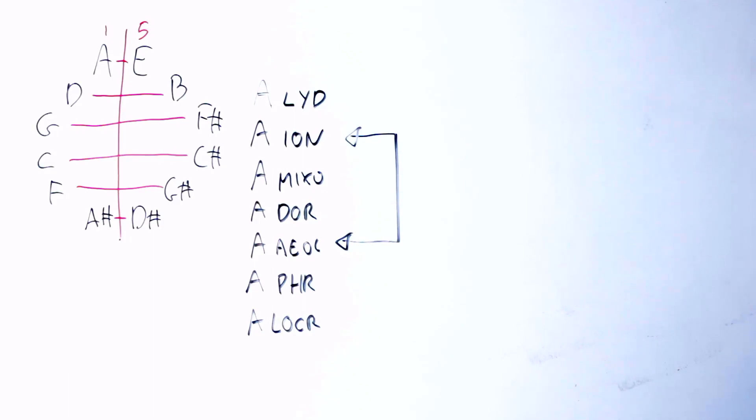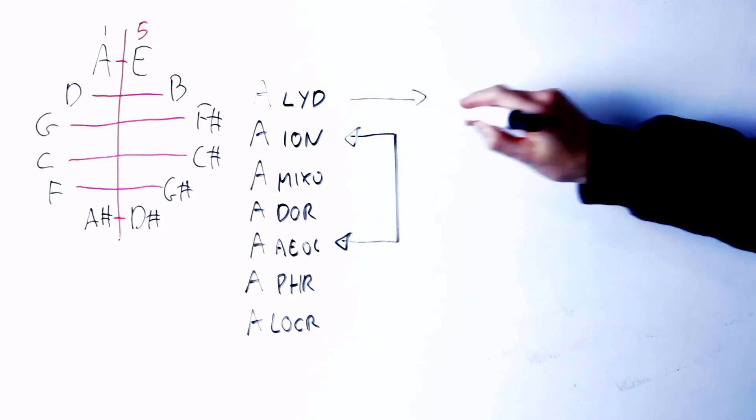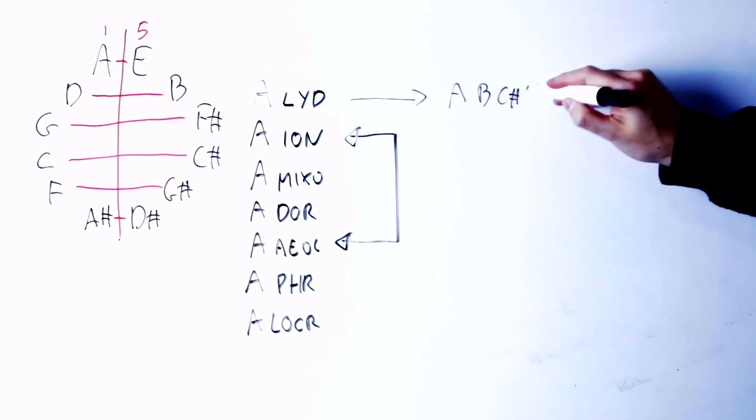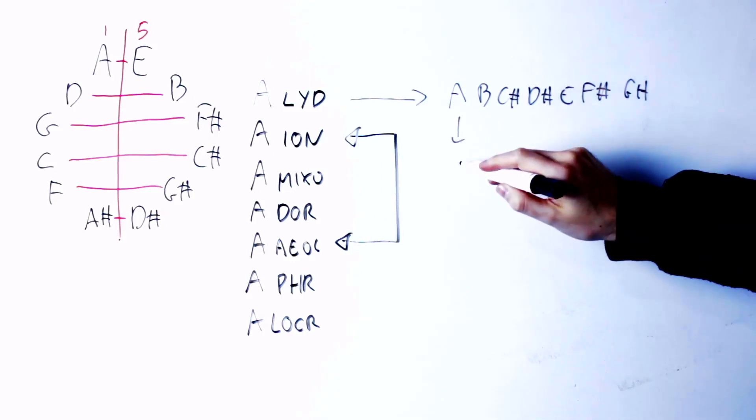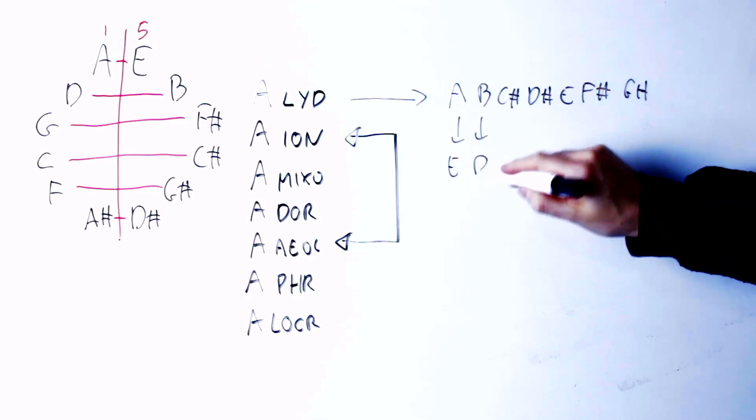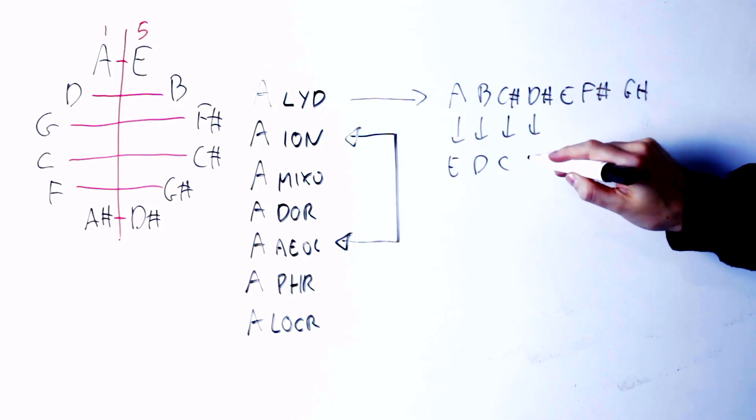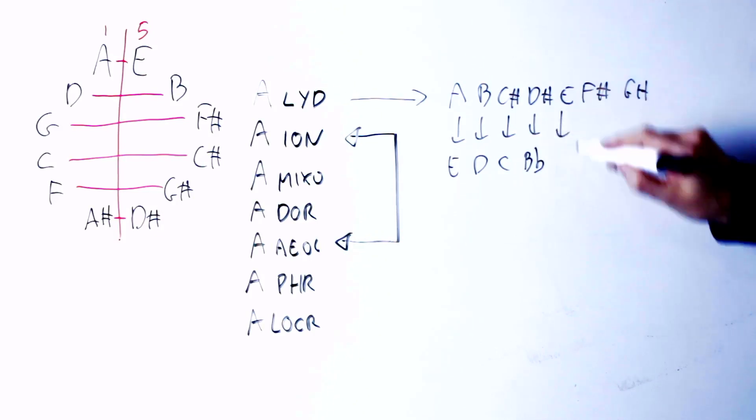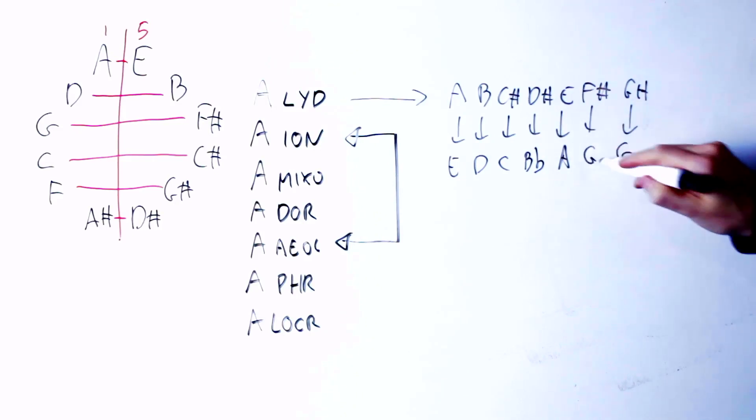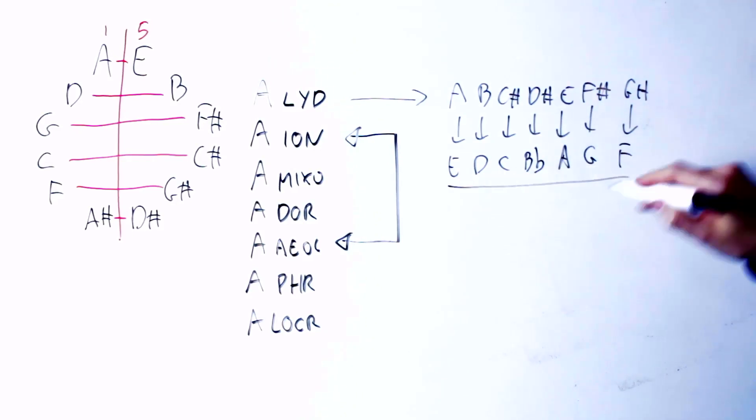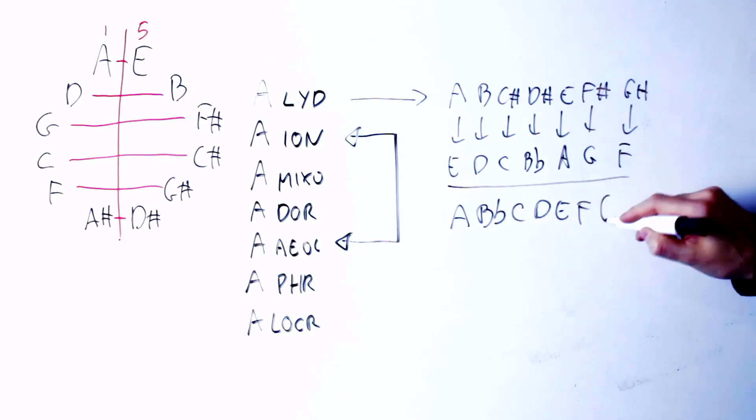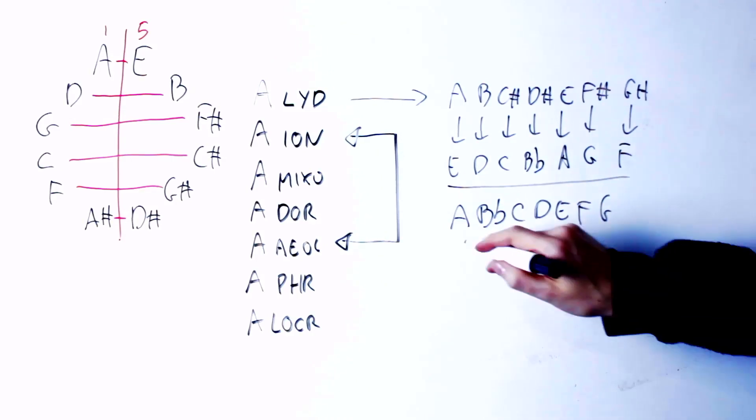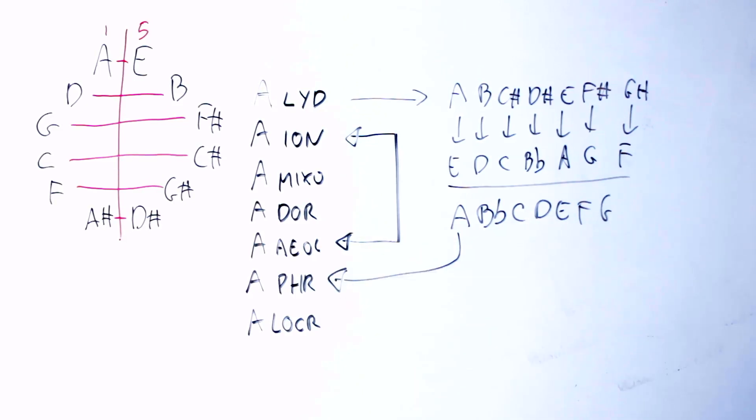What happens to the other modes? Well, let's take the Lydian scale: A B C sharp, D sharp, E F sharp, G sharp. Well, what happens there? Again, A becomes E, B becomes D, C sharp becomes C natural. D sharp, which is the note of difference there, becomes a B flat. E becomes A, F sharp becomes G, G sharp becomes F, and what I get is the A Phrygian scale.